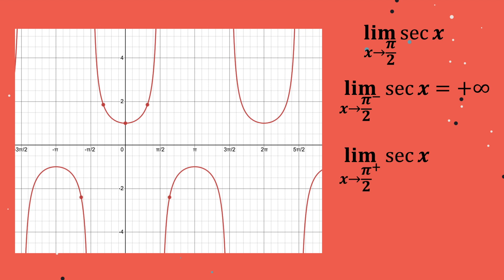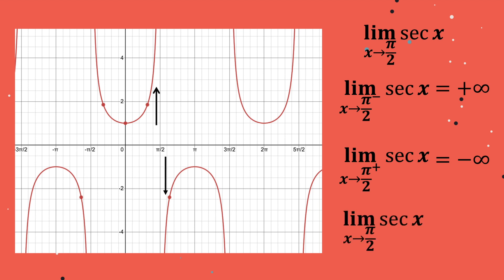On the other hand, as x approaches pi over 2 from the right, the graph goes downward infinitely, which means that the right-hand limit is equal to negative infinity. Since the left-hand limit is not equal to the right-hand limit, the limit of secant x as x approaches pi over 2 does not exist.